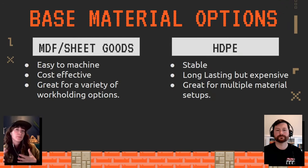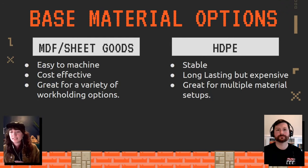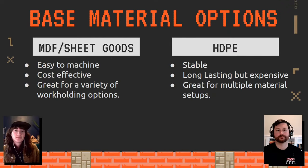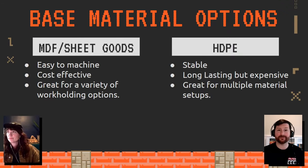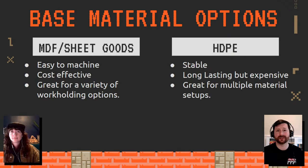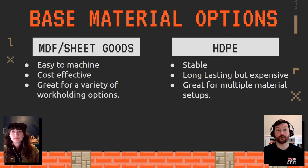MDF is probably the most common spoil board material I've seen out there. It's really easy to machine, cost-effective, and easy to refurbish later on. It offers a great variety of workholding, clamping fixtures, and other options. You can also add a vacuum table using MDF. There are also different densities — high density, medium density, and low density, which is used a lot in vacuum tables as a material to pass vacuum pressure through. The downsides: it creates very fine dust and can be awkward to move because it's quite heavy.